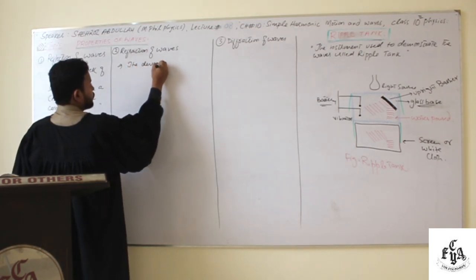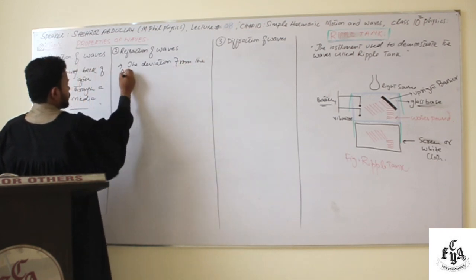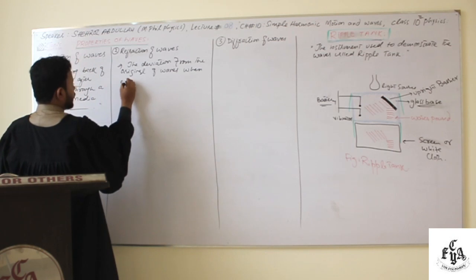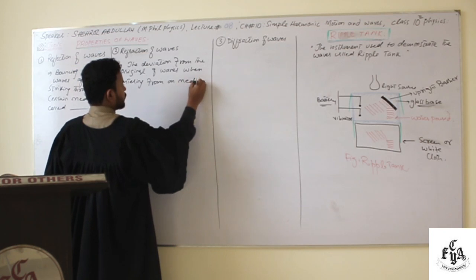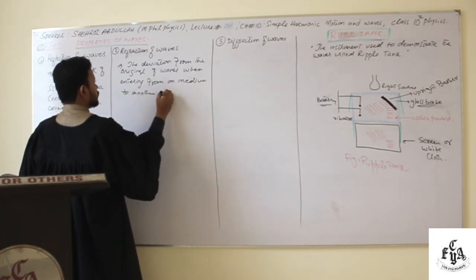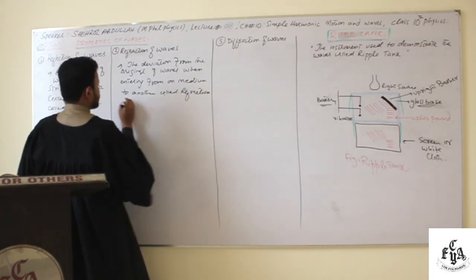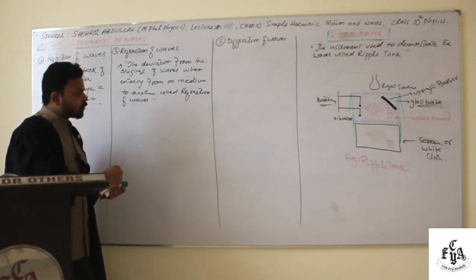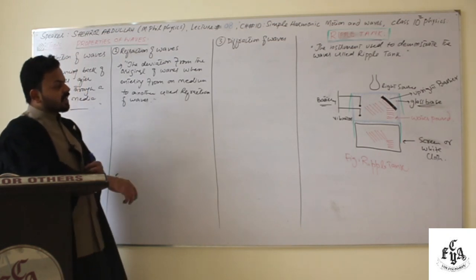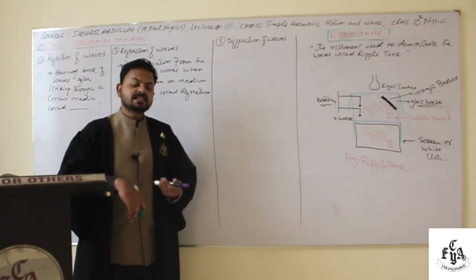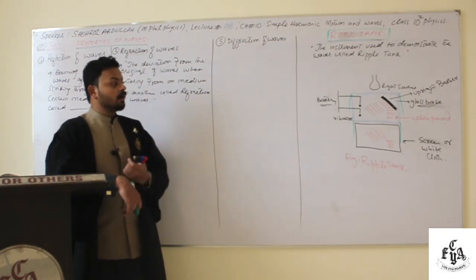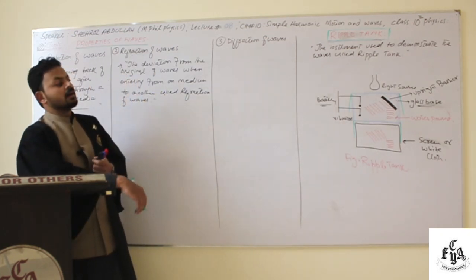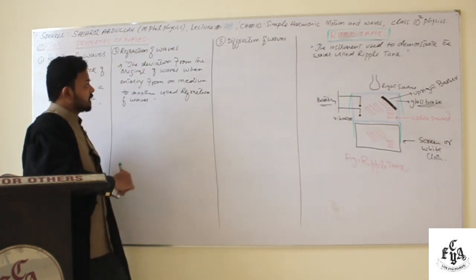The deviation of waves from the original path when entering from one medium to another is called refraction of waves. We can observe refraction of waves in the ripple tank by placing a thin plastic sheet at the glass base. Remember this — it is an MCQ point.